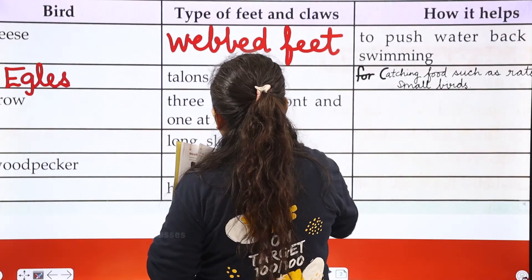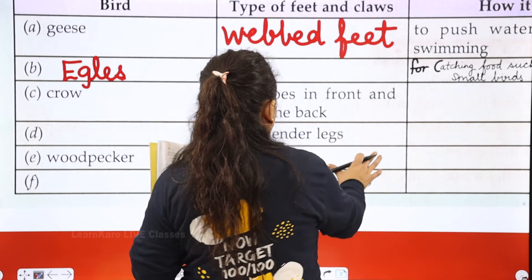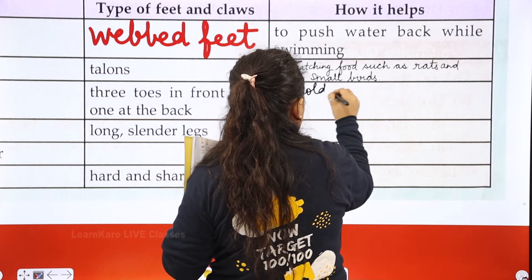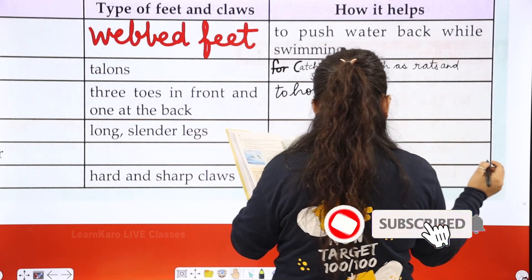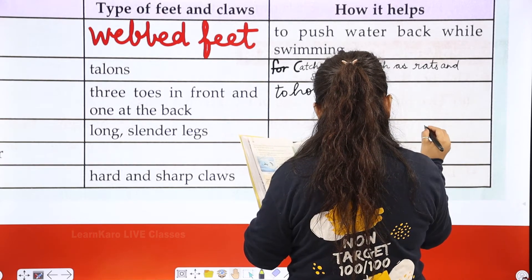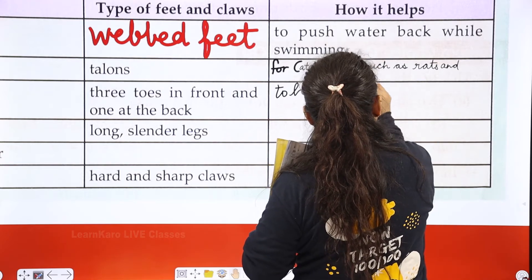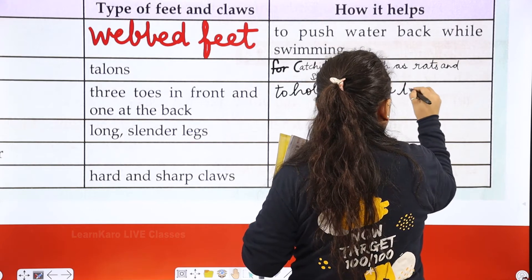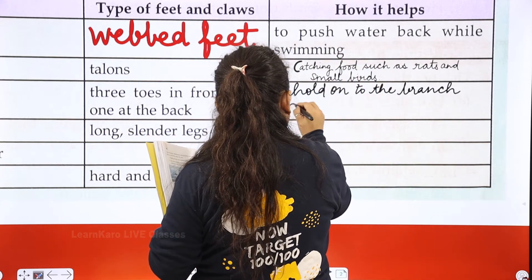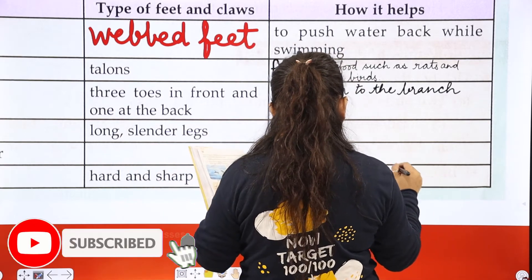Next is crow. Crows have three toes in front and one at the back. This helps them to hold on to the branch of a tree while perching on it.